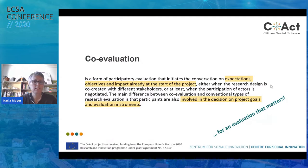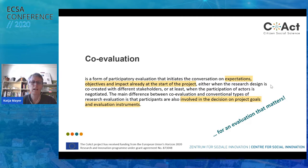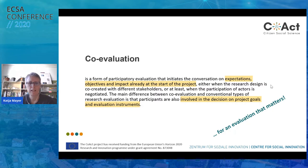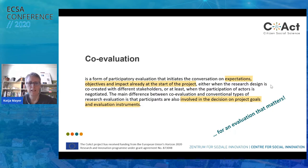What is co-evaluation? It's a form of participatory evaluation that initiates the conversation on expectations, objectives and impact already at the start of the project — either when the research design is co-created with different stakeholders, or at the latest when the participation of actors is negotiated. The main difference from conventional research evaluation is that participants are involved in decisions on project goals and also on evaluation instruments. We think this can create real benefit for the evaluation process and produce an evaluation that matters.